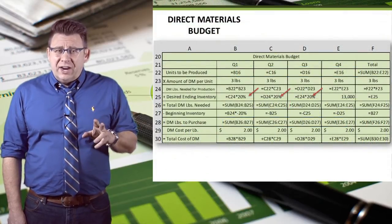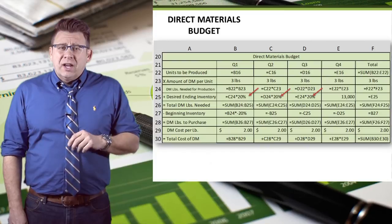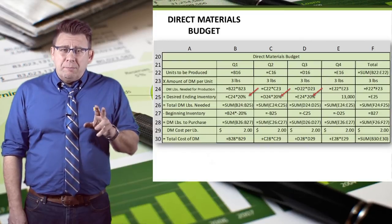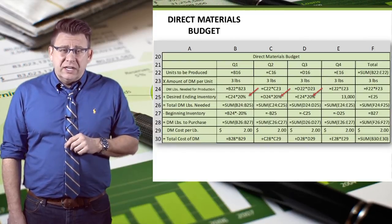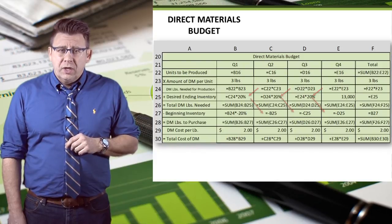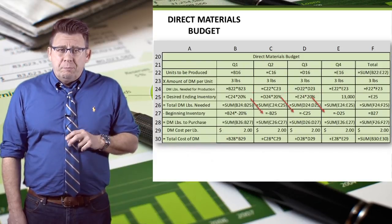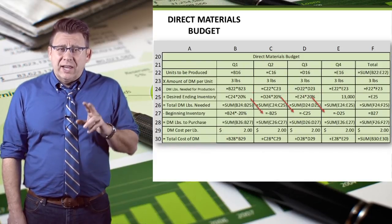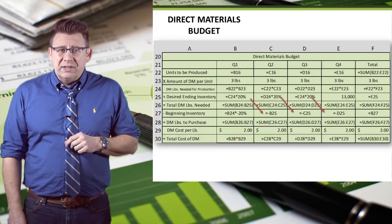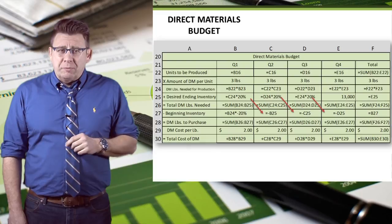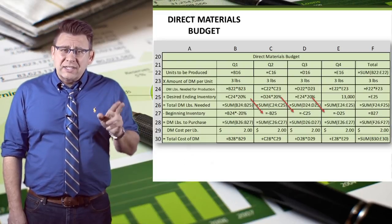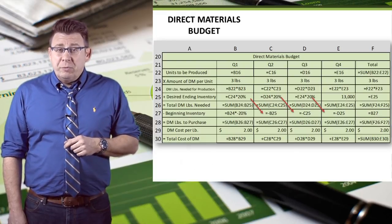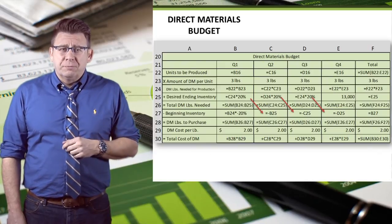The desired ending inventory can be a formula based on the next quarter's pounds of direct materials needed for production. Beginning inventory can be a cell linked to the prior month's ending inventory. Total pounds of direct materials to be purchased and total cost of direct materials can both be formulas as shown here.